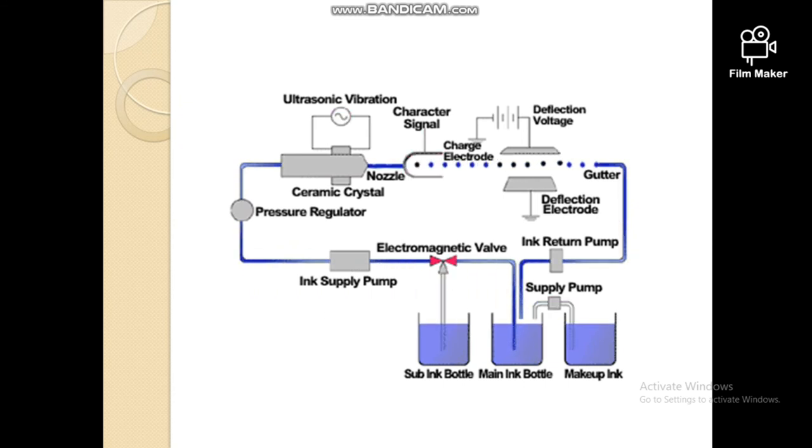An inkjet printer ejects a steady flow of ink droplets. Charging electrodes are used to charge the droplets that are not needed on the paper. Charged droplets are deflected to a gutter by the deflection plates, while uncharged droplets fly straight onto the paper, and we get the document that is to be printed.